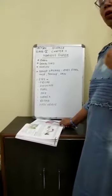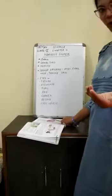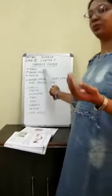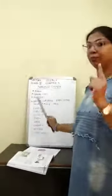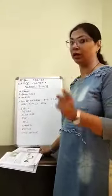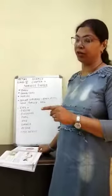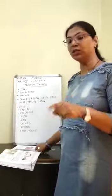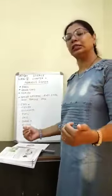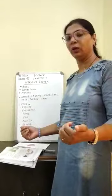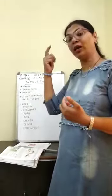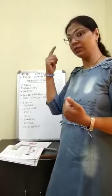Like there are many organ systems in our body, so the nervous system is one of them, but it is the most important system in our body because it controls all the other systems. All the other systems are controlled by our nervous system.